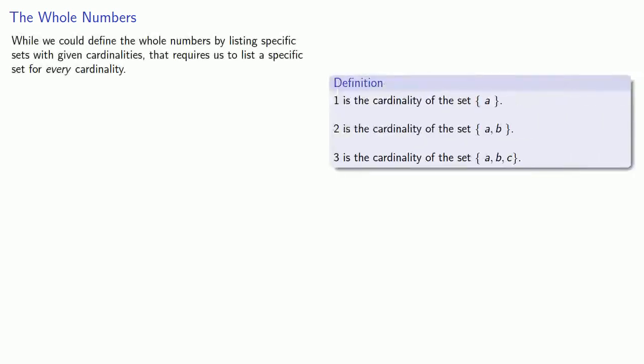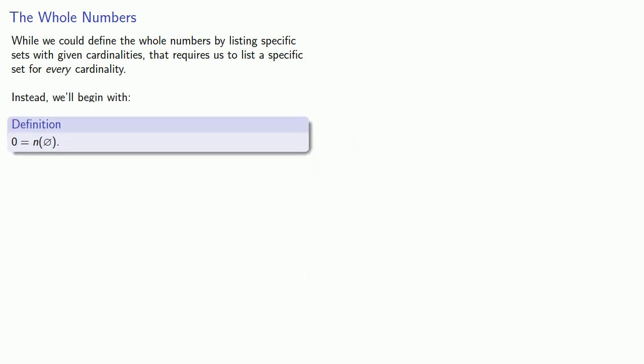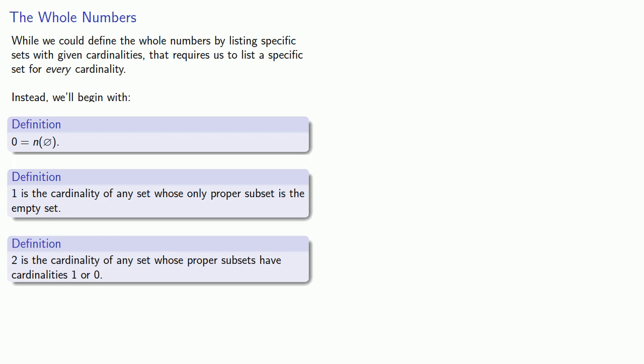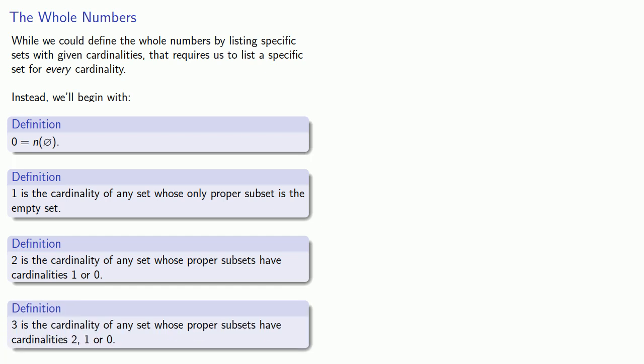And this finally allows us to properly define the whole numbers. While we could define the whole numbers by listing specific sets with given cardinalities, that requires us to list a specific set for every cardinality. Instead, we'll begin as follows: zero is the cardinality of the empty set. Then one is the cardinality of any set whose only proper subset is the empty set. Having defined zero and one, two is the cardinality of any set whose proper subsets have cardinalities one or zero. By referring to previously defined cardinalities, we can continue: three is the cardinality of any set whose proper subsets have cardinalities two, one, or zero — and so on.